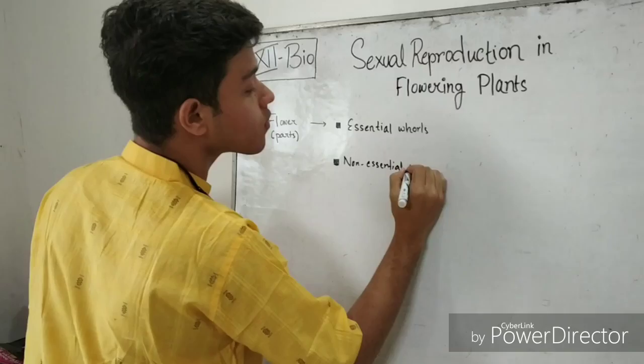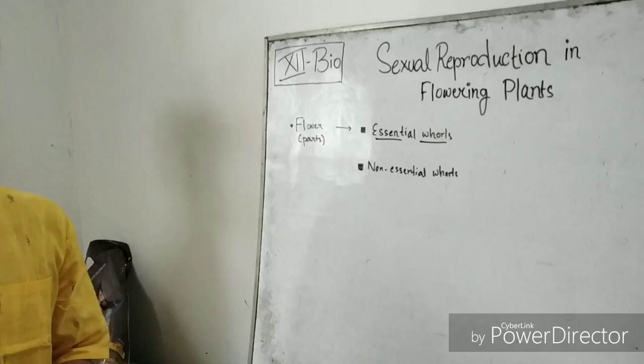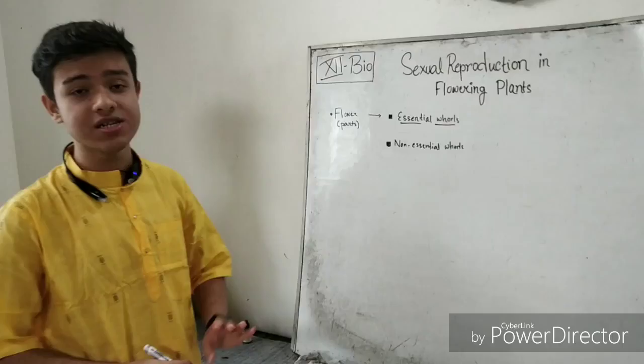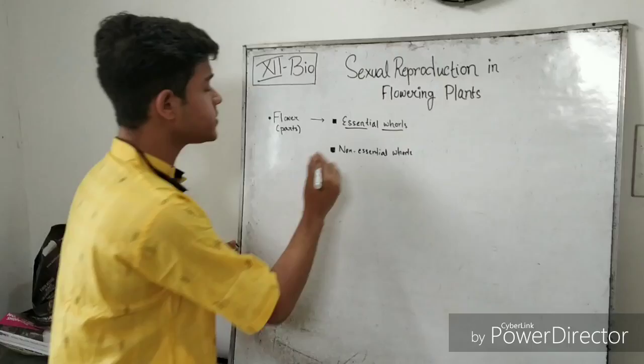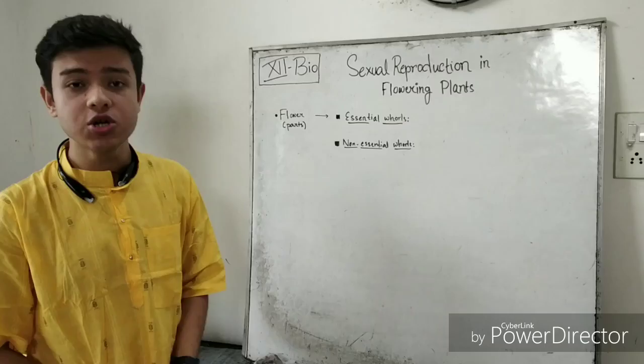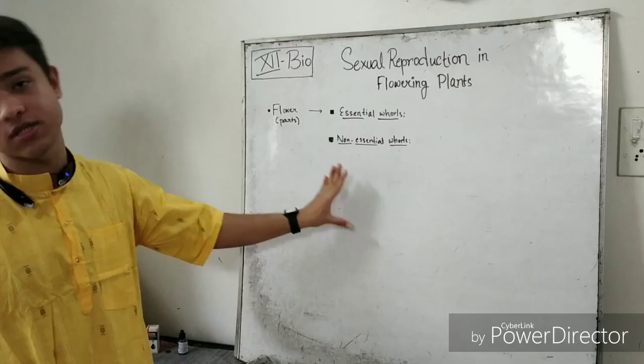What are essential whorls? Essential whorls are the parts of a flower which are directly linked with the phenomenon of reproduction — directly, as in they produce the gametes which carry out sexual reproduction. And non-essential whorls are those parts of the plant which are not directly linked with reproduction but each has its own important function, even the non-essential whorls.